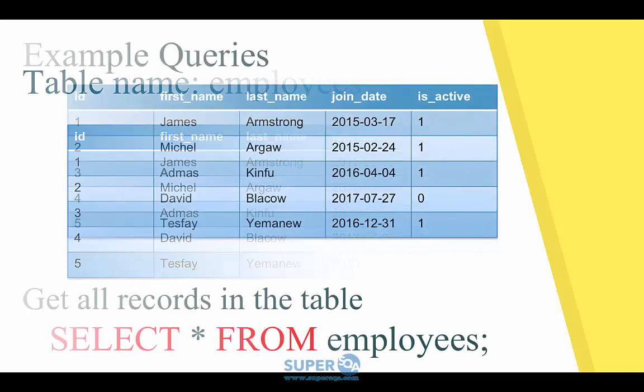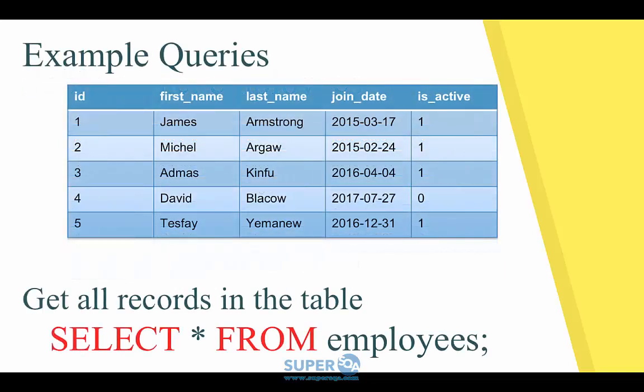Now let's say we want to get everything in this table. This will be a SQL query — the one you see at the bottom in red. That's a very common and probably the simplest form of SQL. It's saying SELECT * FROM employees. SELECT just means 'get me', the star means everything — meaning all the fields, all five of them — from the table employees. This will return everything in that table.